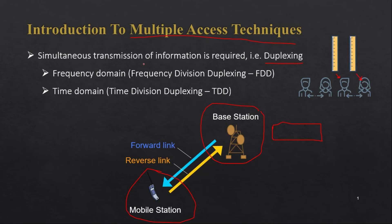We can achieve multiple access techniques in two domains: one is the frequency domain and another is the time domain. In the frequency domain, we divide the frequency — that technique is called frequency division duplexing, or FDD. In the time domain, we divide resources in terms of time — that is time division duplexing, or TDD.